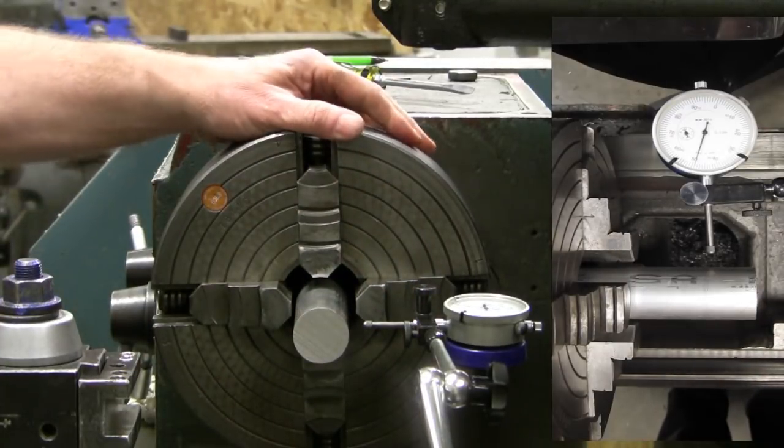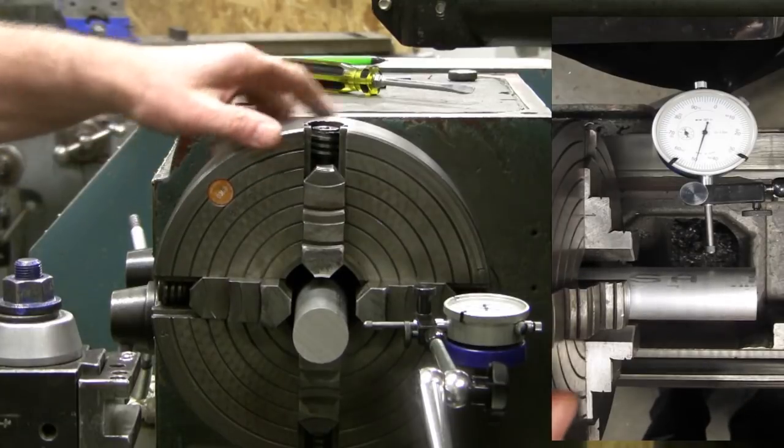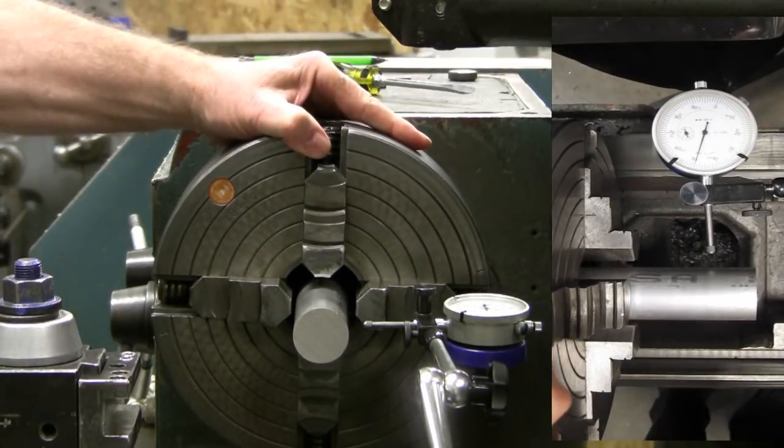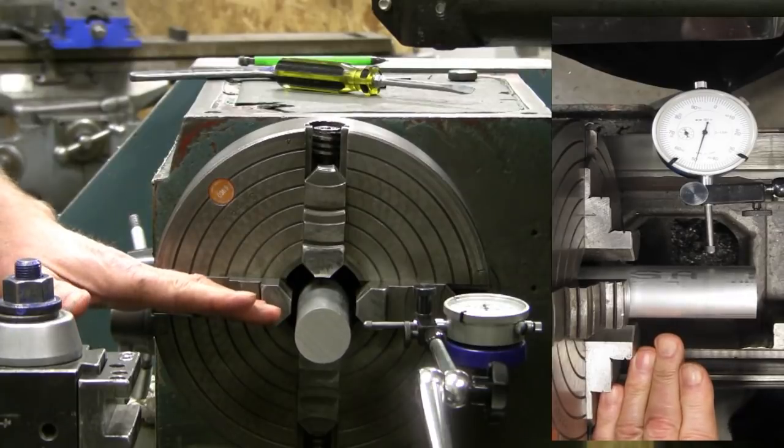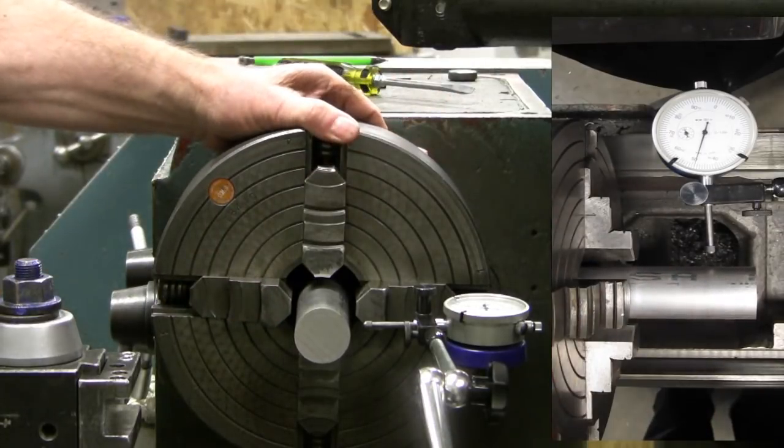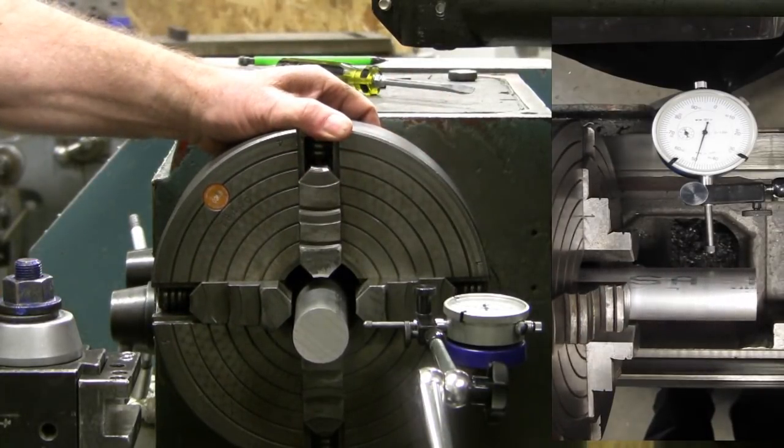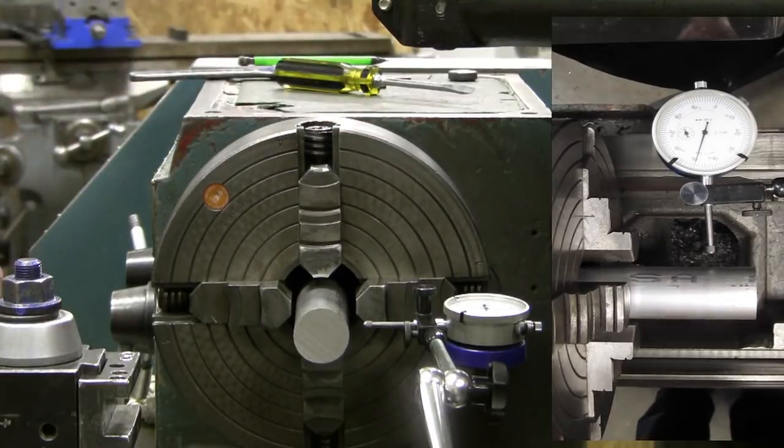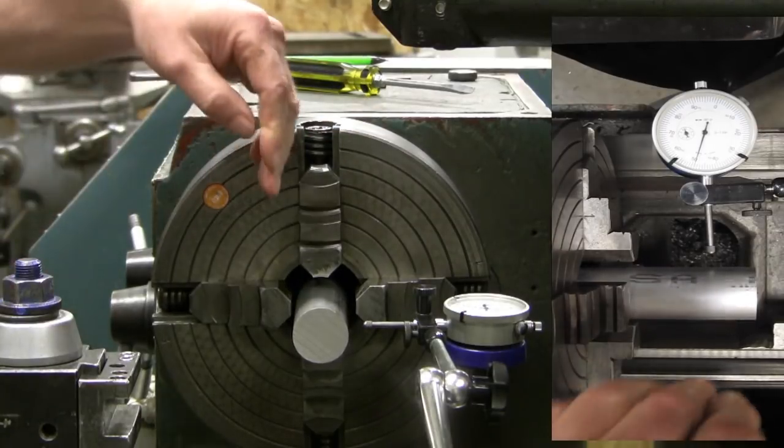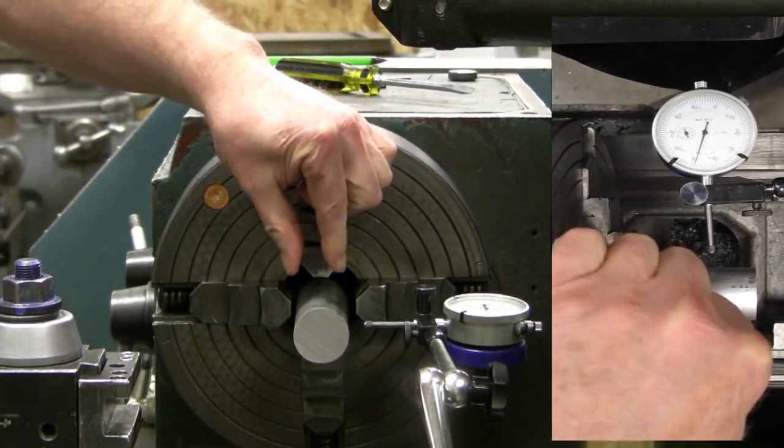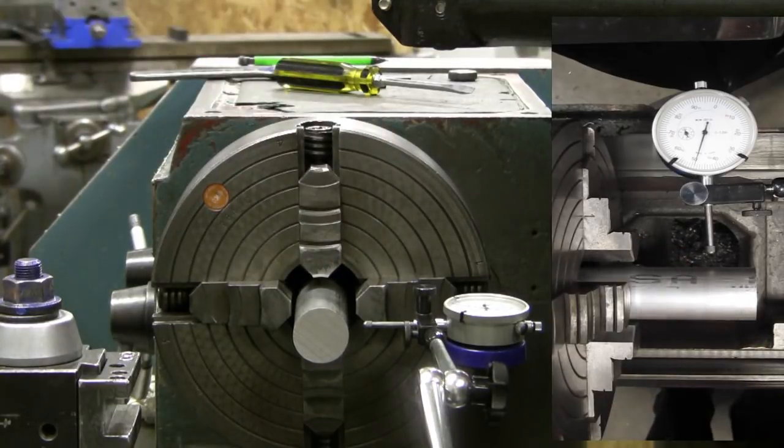First thing we want to do is make sure that the part is in here and two jaws are horizontal and two jaws are vertical. That looks pretty close. The inside of the jaws are a little bit concave, so this part kind of settles into the middle of the vice or the chuck jaw.